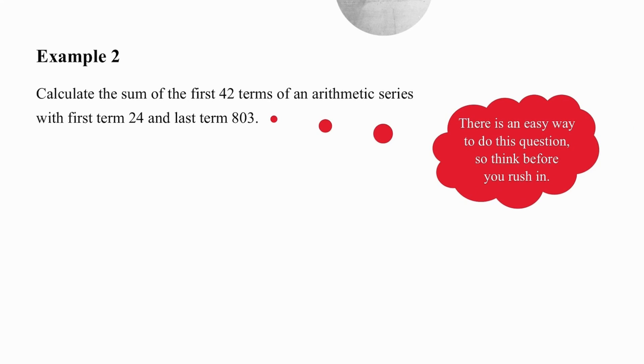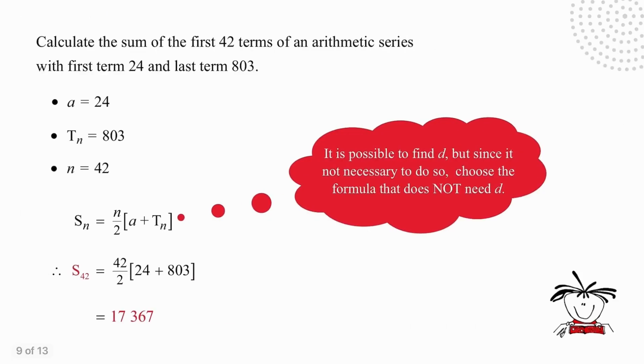Example two. Look at the hint. There's an easy way to do the question. So pause and think before you rush in. And then I will go through it with you. What I'm hoping you noticed is that the last term's value was given. And in that case, it is much easier to use the formula N over 2 times A plus T_N. The reason why this is easier in this situation is I don't know the D value. And if I use the other formula, I will have to work it out. So using this method makes this question very easy. We know we're working with 42 terms. So we start with substituting 42 over 2. The A value has been given as 24. The last term is given as 803. And all we have to do now is put that into our calculator and work out the answer. So the answer there is 17,367. I suggest you pause the video and try the question again on your own, if that didn't make sense to you.